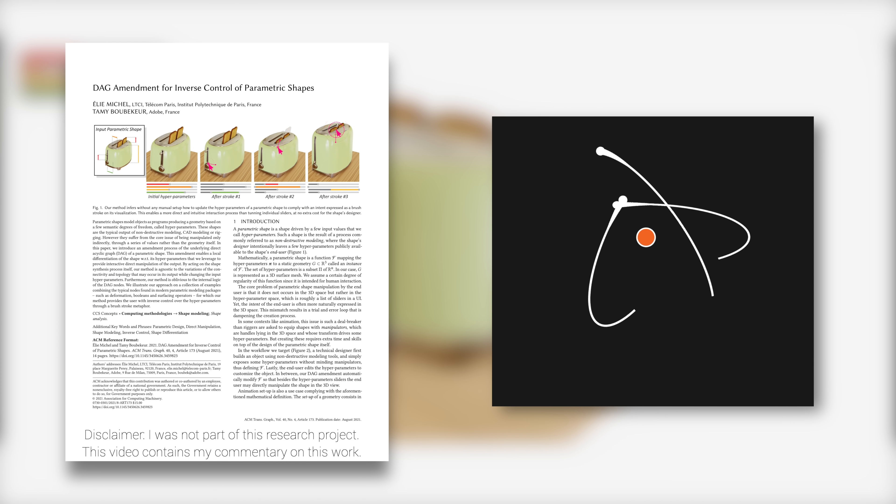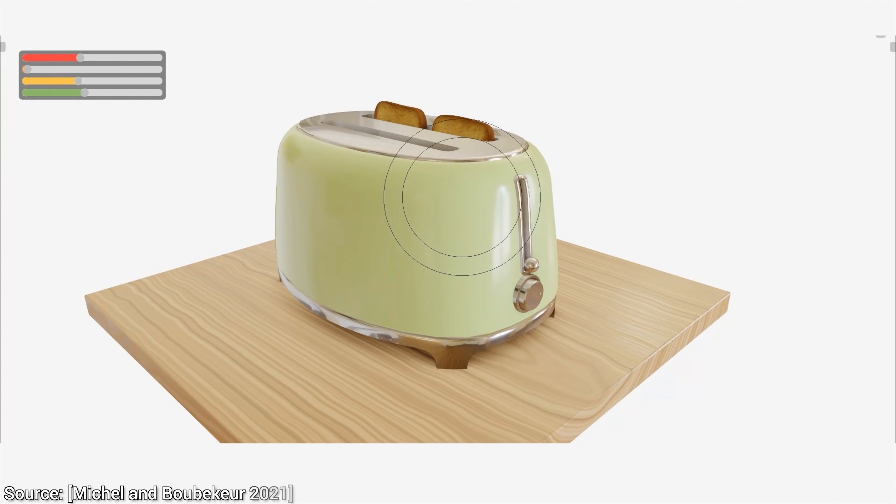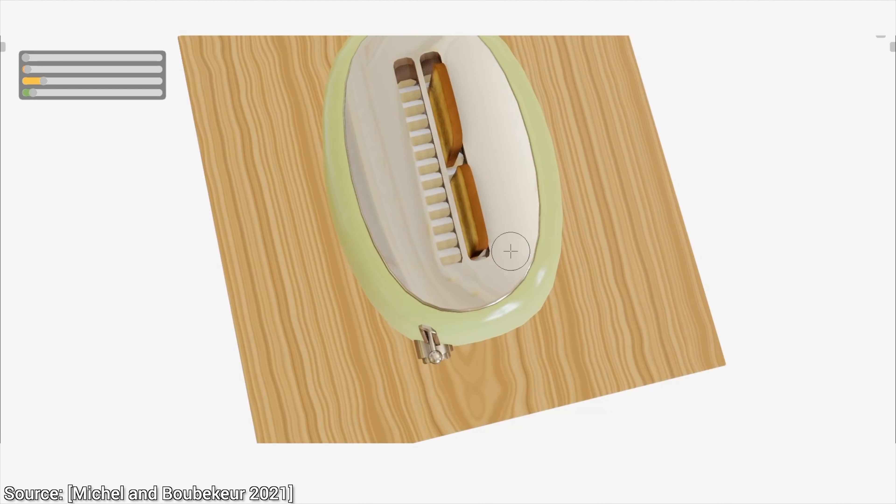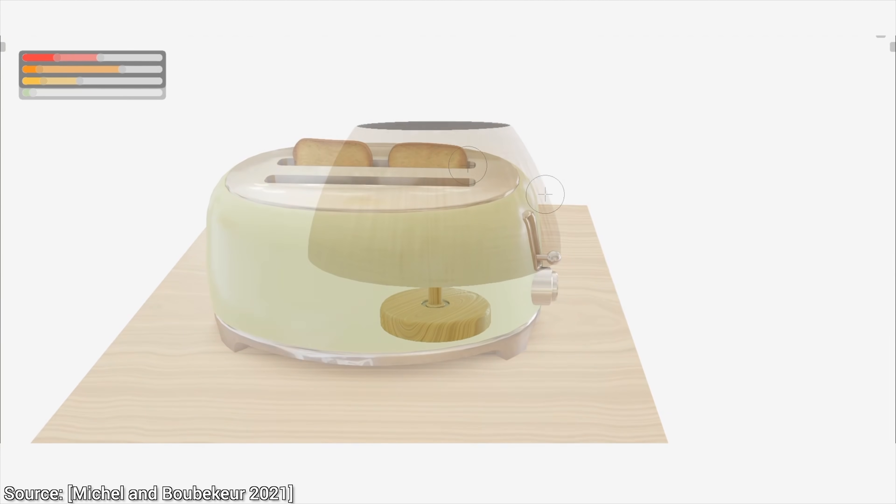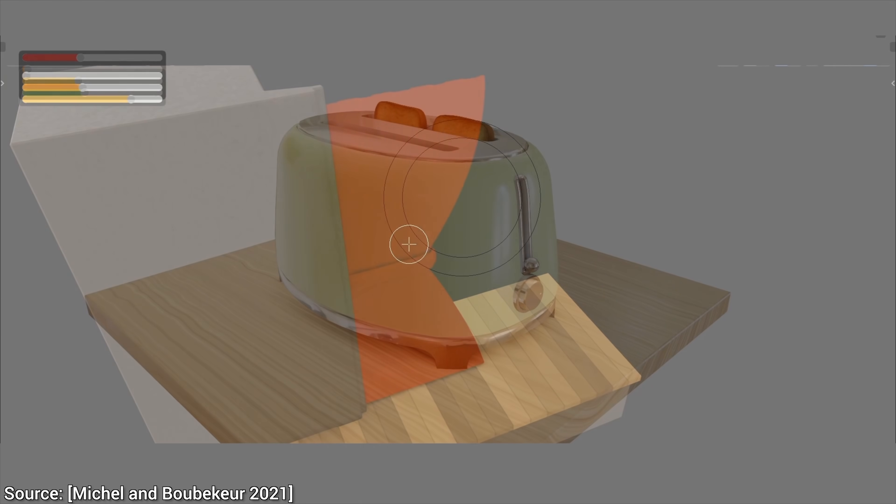Dear Fellow Scholars! This is Two Minute Papers with Dr. Károly Zsolnai-Fehér. Today, we are going to build the best virtual toaster that you have ever seen. And it's going to be so easy that it hardly seems possible. All this technique asks for is our input geometry to be a collection of parametric shapes. I'll tell you in a moment what that is, but for now, let's see that toaster.